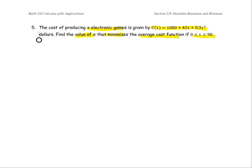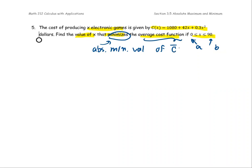Our goal is to find the X value that minimizes within the closed interval. We identify A = 0 and B = 90, and we want to minimize. Overall, we're going to find X that gives the absolute minimum value of the average cost function. We have the cost function C(X) = 1080 + 42X + 0.3X².